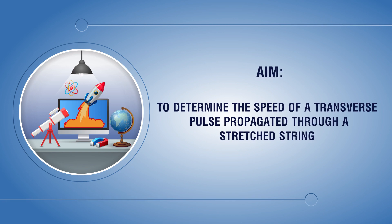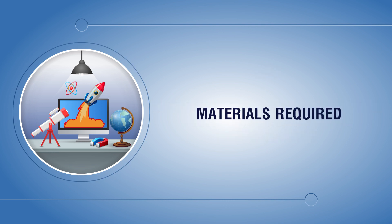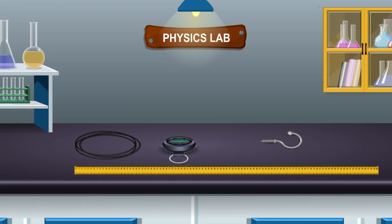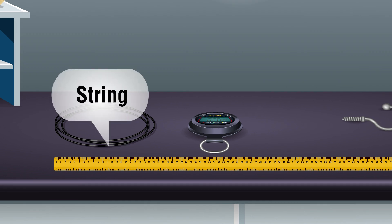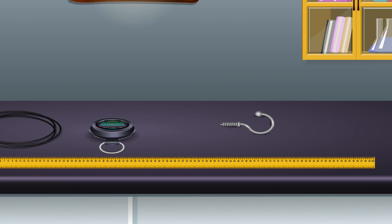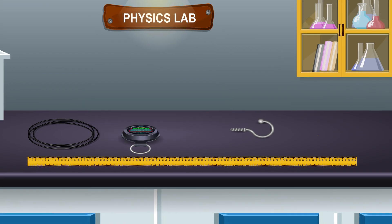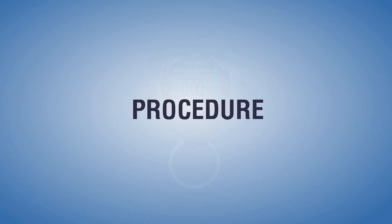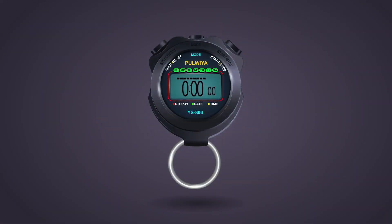Aim: to determine the speed of a transverse pulse propagated through a stretched string. Materials required: string, stopwatch, hook or door handle, meter scale. Procedure: find least count of stopwatch.